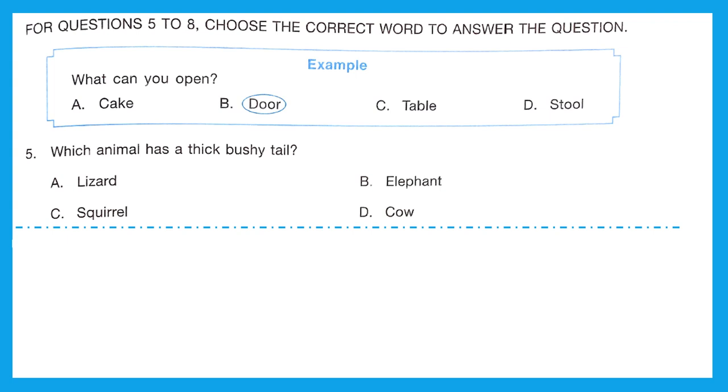Question 5, which animal has a thick bushy tail? Is it lizard? No, because lizard has scales on tail. Is it elephant? No, it has very short tail. Is it squirrel? That's right. Because squirrel has thick bushy tail. Let me show you how a squirrel looks like. Can you see that thick bushy tail? Our answer is option C.